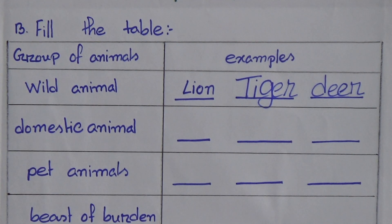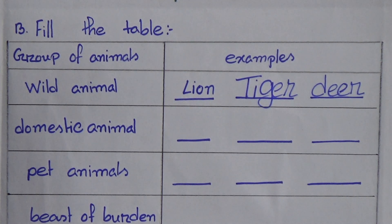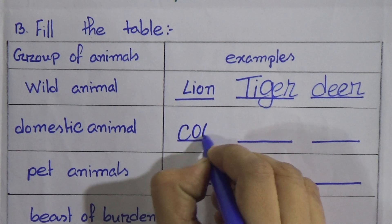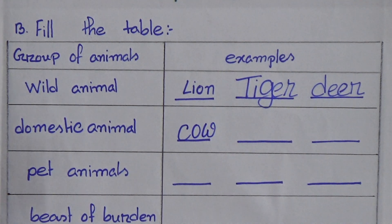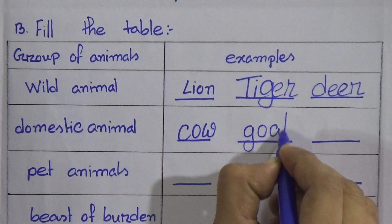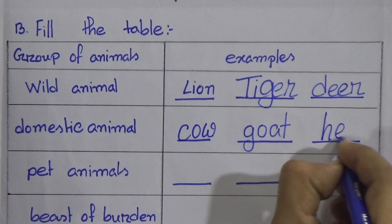Number 2: Domestic animals. Domestic animals are the animals which live in our house and depend on us for their food, shelter and other things. You know that cow, goat, hen, and sheep are domestic animals. Now we write the names: cow, goat, hen.